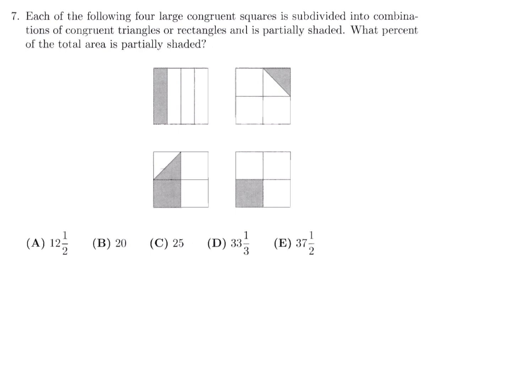Each of the following four large congruent squares is subdivided into combinations of congruent triangles or rectangles and is partially shaded. What percent of the total area is partially shaded? So let's just use some numbers. Let's say that each of these has an area of one, each of these squares. So that means the total area is going to be four. And we have to figure out what percentage of the total area is shaded. Well, in this one, these are congruent rectangles. What that means is that they're all equal. So obviously, one quarter is what's shaded. So one quarter is my first value.